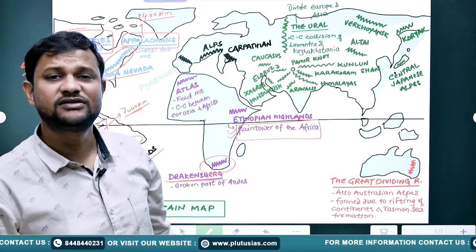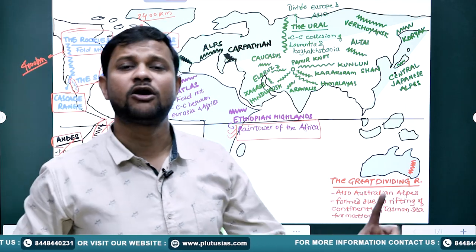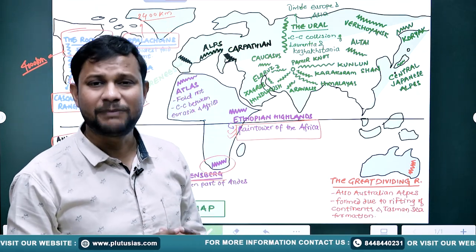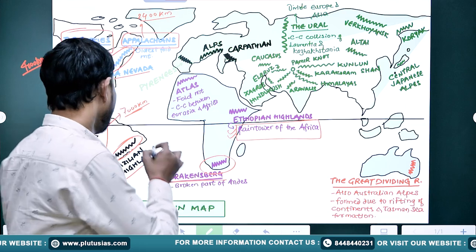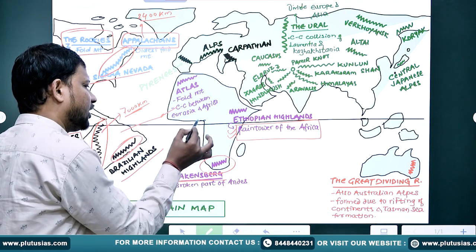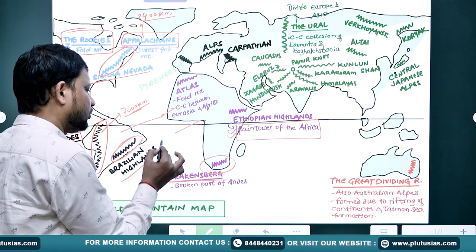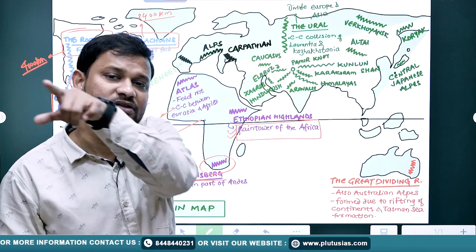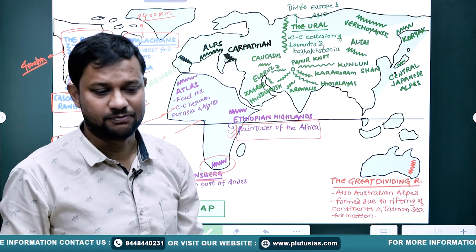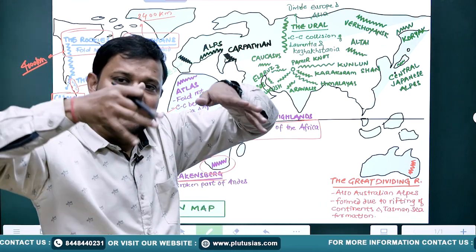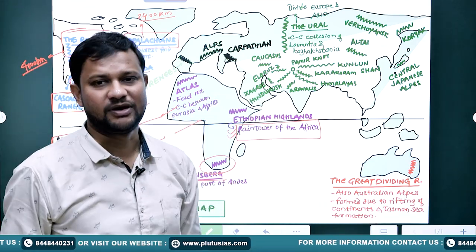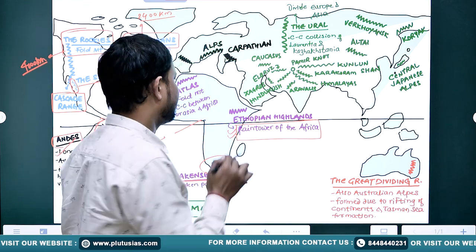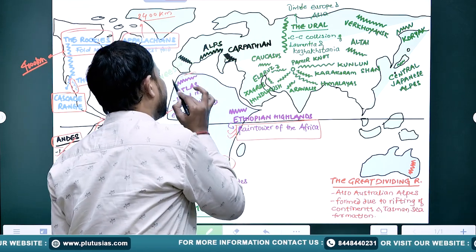Then in the south there is Drakensberg — which is actually the broken part of the Andes. According to plate tectonic theory, when South America and Africa were once a united part, the Andes stretched over into the African section. When rifting occurred, Drakensberg got separated. So Drakensberg is located over southern Africa.